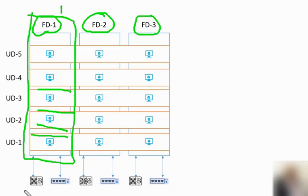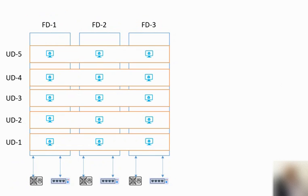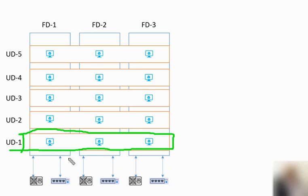Similarly we have Fault Domain 2 and Fault Domain 3. Physically, these racks are connected with individual power supplies, and a power outage could occur due to a power supply failure or a network switch failure — that's why this is called a Fault Domain. For Update Domains, it's a logical grouping of virtual machines running on different nodes across fault domains, clubbed together so they can be rebooted as a group during updates.